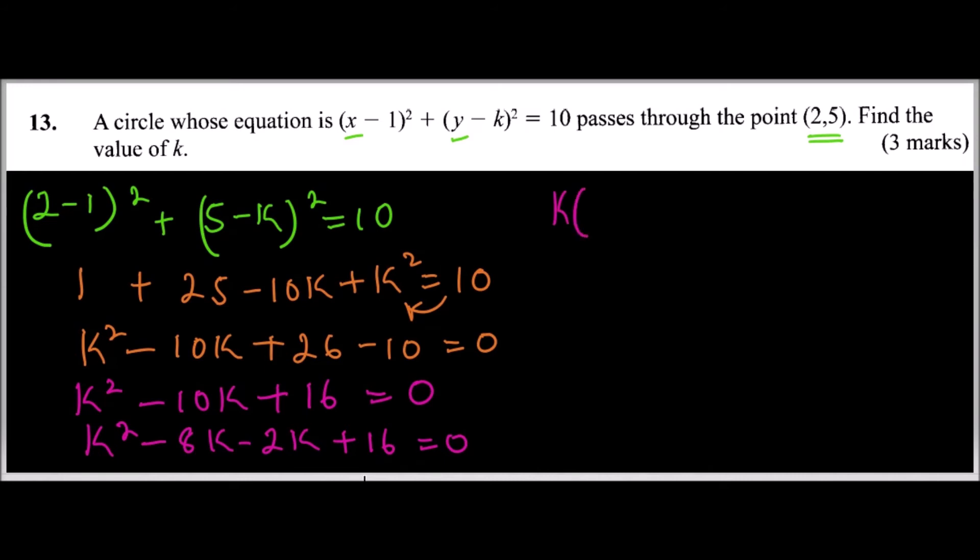So we factor out k here, we'll be left with (k - 8), and then we factor out minus 2, we'll be left with (k - 8), which equals 0. So we factor out (k - 8) and we have (k - 2) = 0.